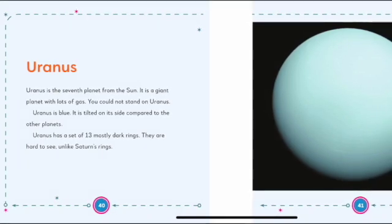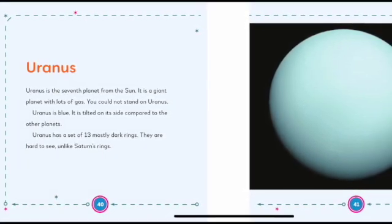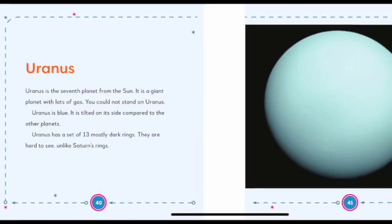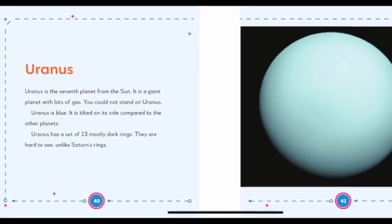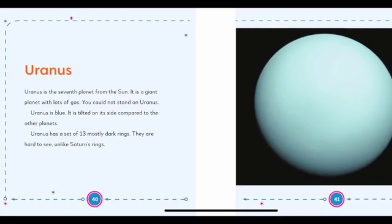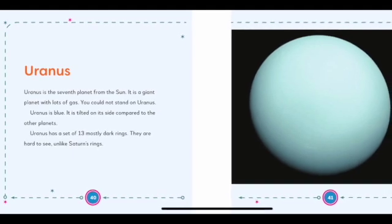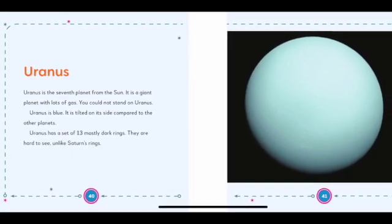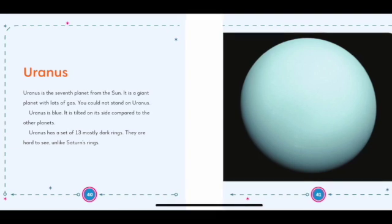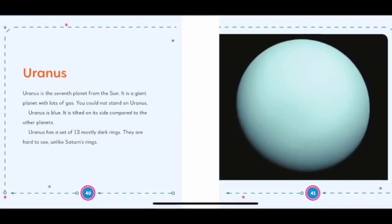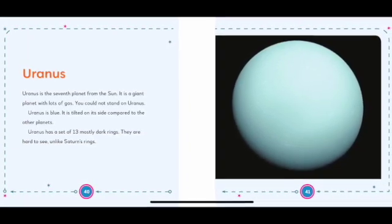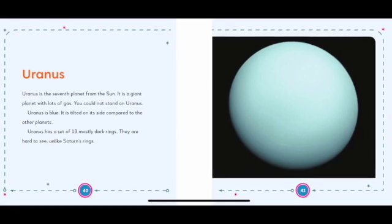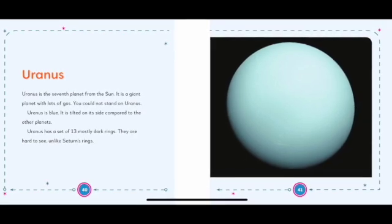Uranus. Uranus is the seventh planet from the Sun. It is a giant planet with lots of gas. You could not stand on Uranus. Uranus is blue. It is tilted on its side compared to the other planets. Uranus has a set of thirteen mostly dark rings. They are hard to see, unlike Saturn's rings.